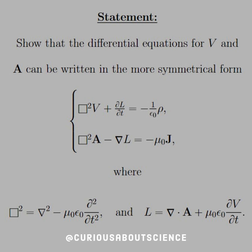Where box squared is another operator, much like del squared was a Laplacian. Except here we have the box squared del squared minus mu naught epsilon naught D squared DT squared.